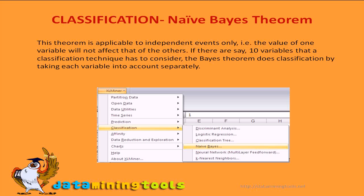This assumption is made to simplify the computation and in that sense is considered naive. It is a fairly strong assumption and is often not applicable. However, biased estimated probabilities often may not make a difference in practice. It is the order of the probabilities, not their exact values, that determine the classifications. Studies comparing classification algorithms have found that the Naive Bayesian classifier is comparable in performance with classification trees and neural network classifiers.